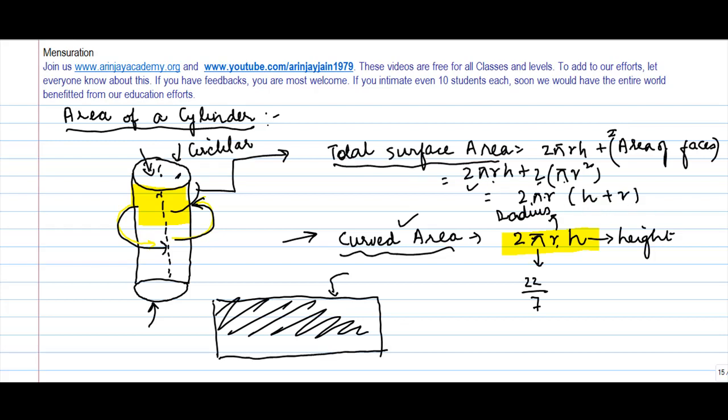h plus r. So the total surface area of a cylinder is 2πr multiplied by (r + h), whereas if you have to find out the curved area, it is 2πrh.